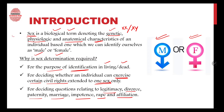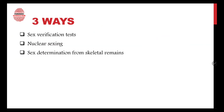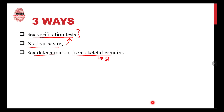For sex determination there are three ways. First, we can do a sex verification test — nuclear sexing comes under this but will be discussed in detail in my next video. Then comes the most important: sex determination from skeletal remains, that is from the skull, pelvis, mandible, and sacrum. These will also be discussed in upcoming videos.